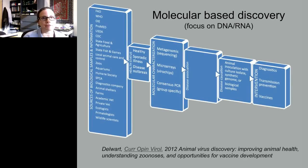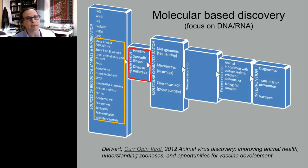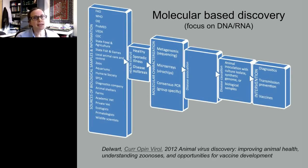This graphic from Eric Delwart's review on animal virus discovery illustrates that samples can come from a whole range of tissues — just like in human medicine. People involved with animal health have the ability to identify an illness in an individual animal or in an outbreak, and from that identification they can move into a variety of methods to characterize a virus or pathogen.